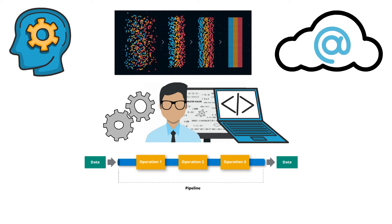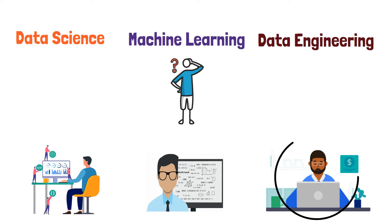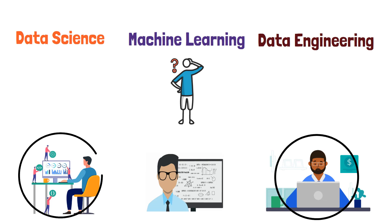Now, these three fields are dependent on each other. There is no comparison as to which one is better — it is completely based on your interest which one you choose. If you like building pipelines, data models, and schemas, then you can become a data engineer. If you like cleaning data, visualization, and building dashboards, then you can become a data scientist. Or you can become a machine learning engineer if you have the knowledge and skill set required to get the job done. So ask yourself: which one are you — data engineer, data scientist, or machine learning engineer?